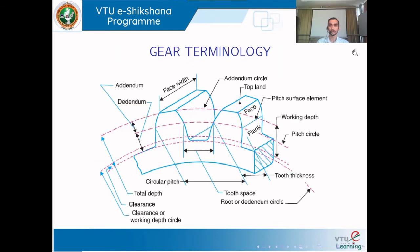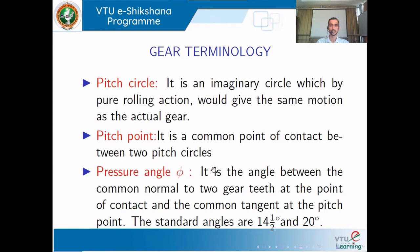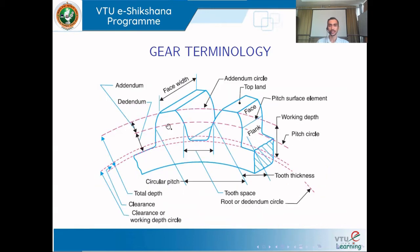Now let us talk about gear terminology. The pitch circle is a circle which, upon pure rolling action, gives the same motion as that of the actual gear. It is drawn exactly at the center of the gear, passing at the intersection of the face and the flank.